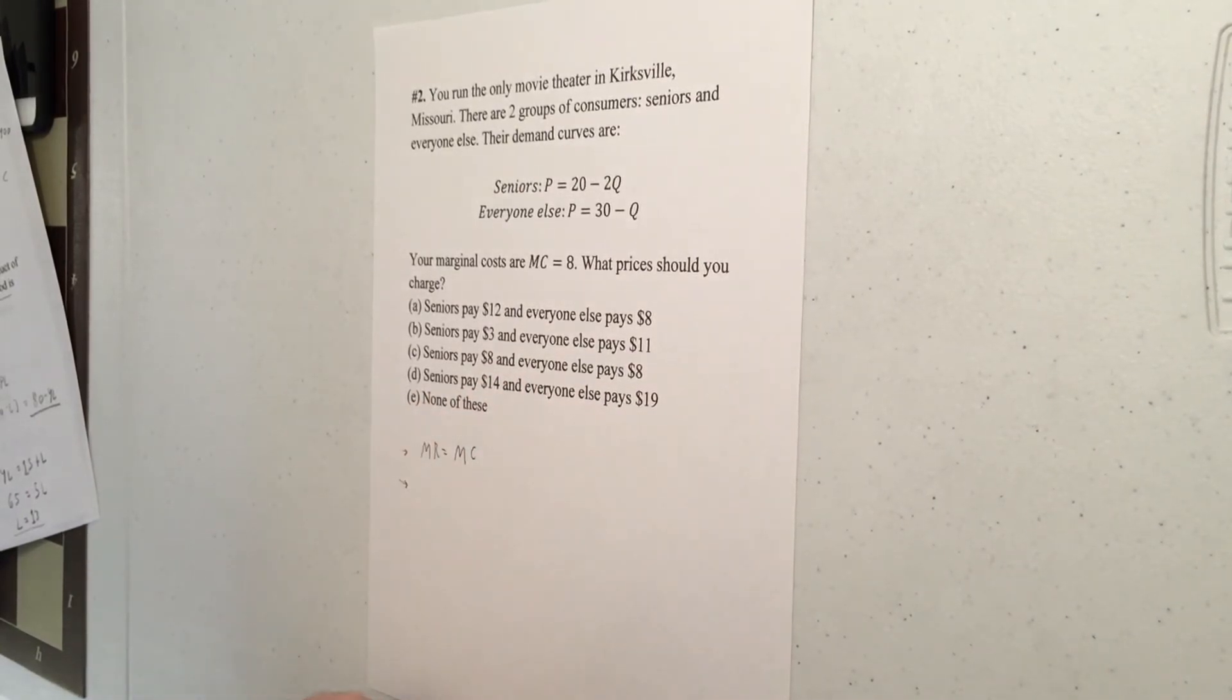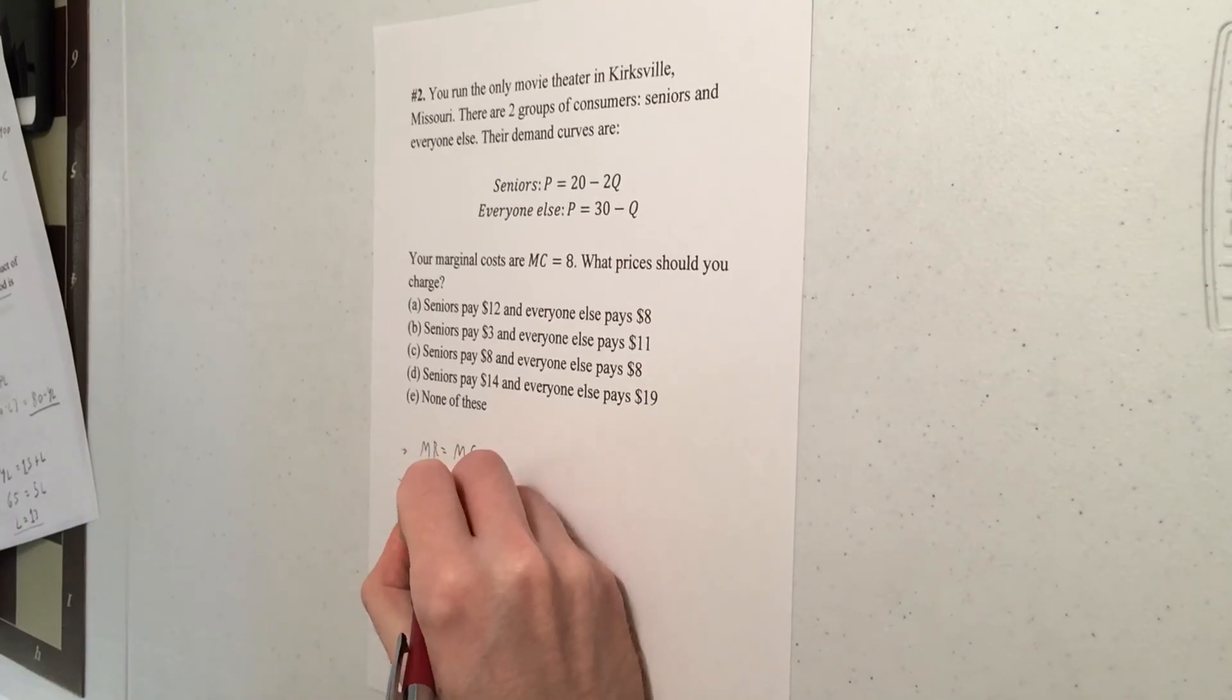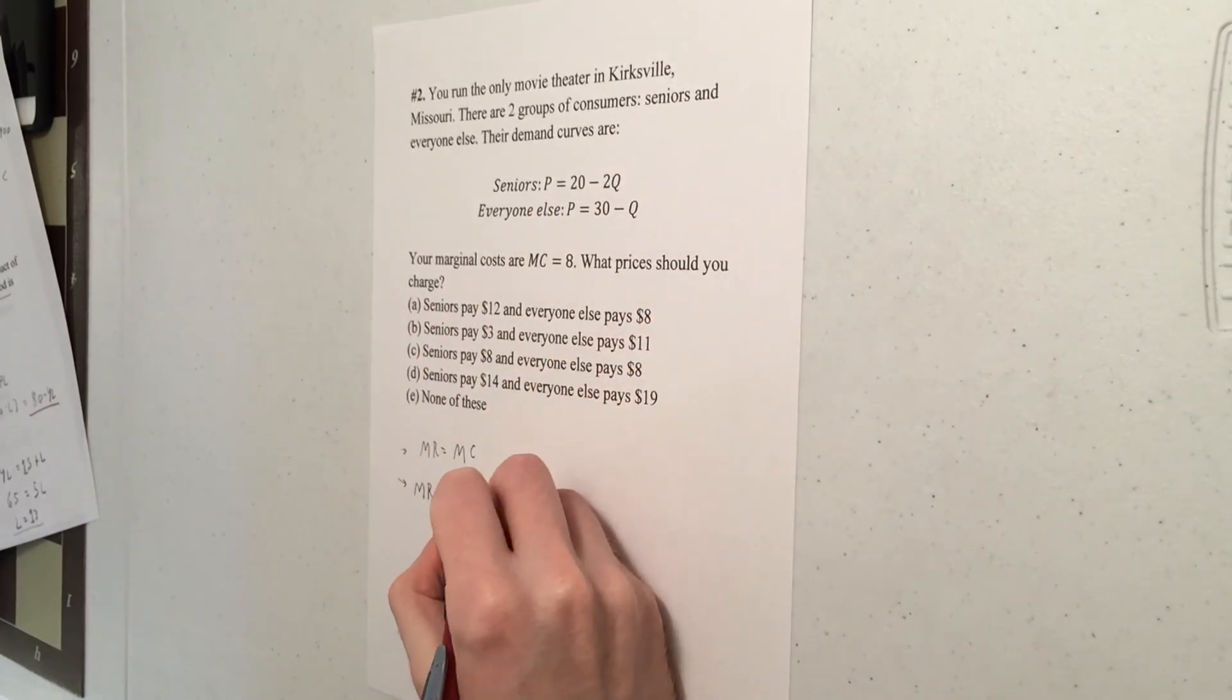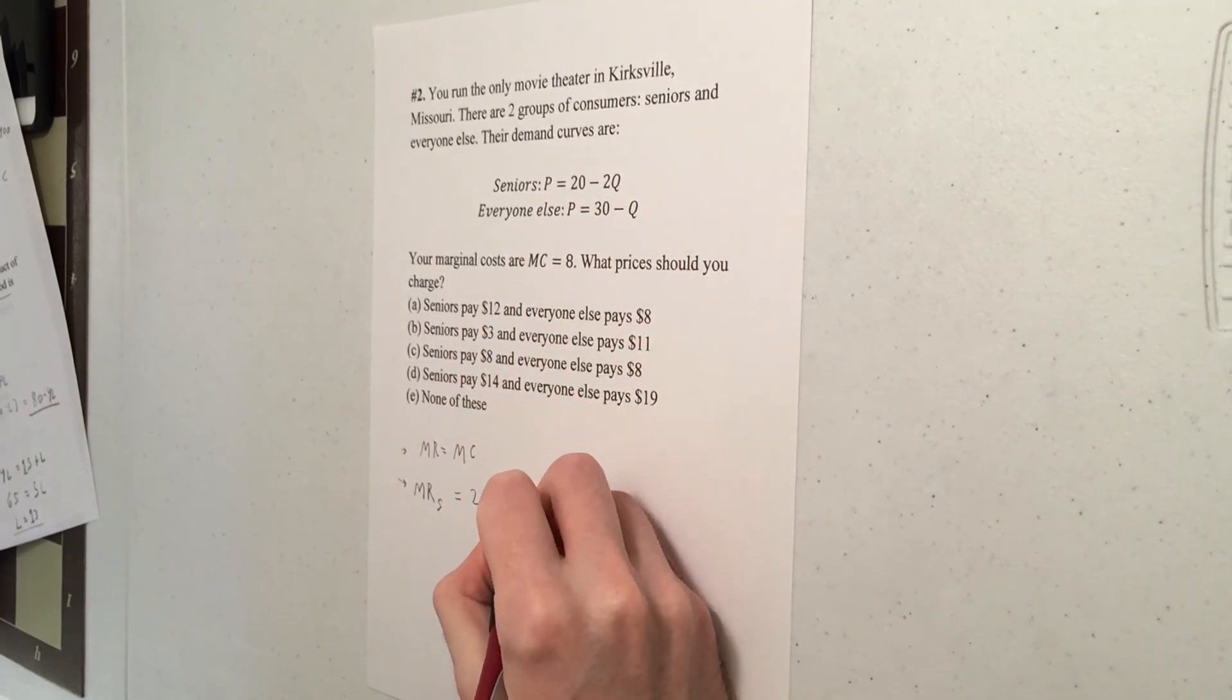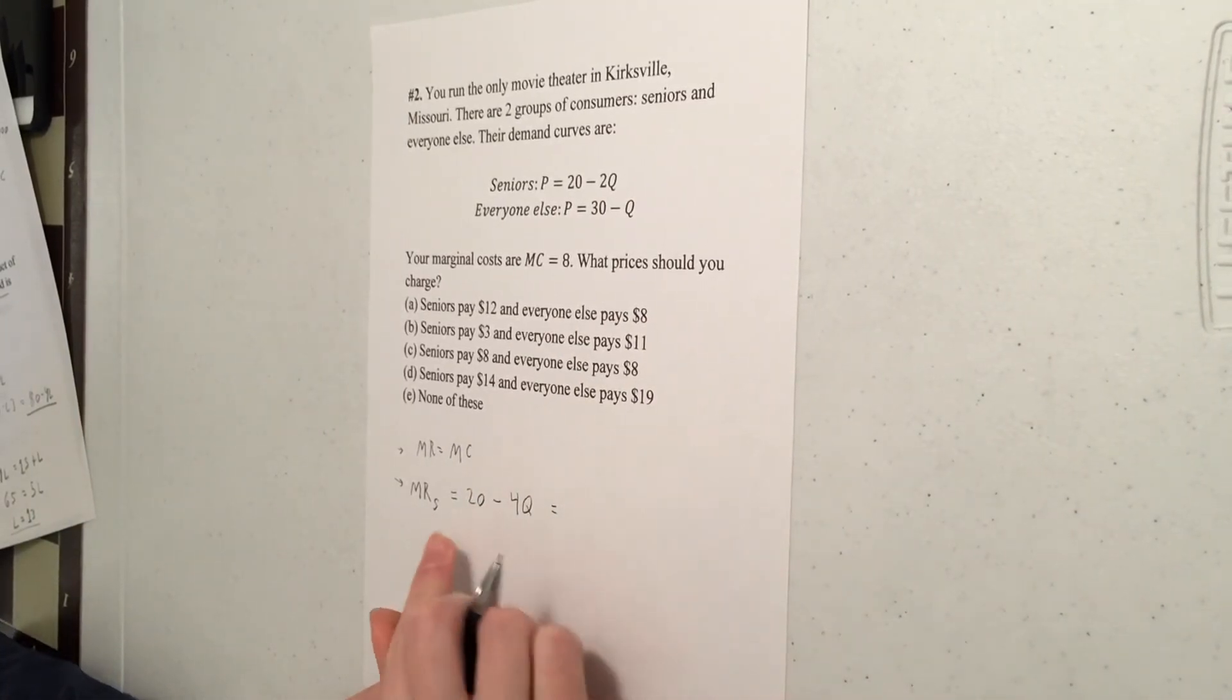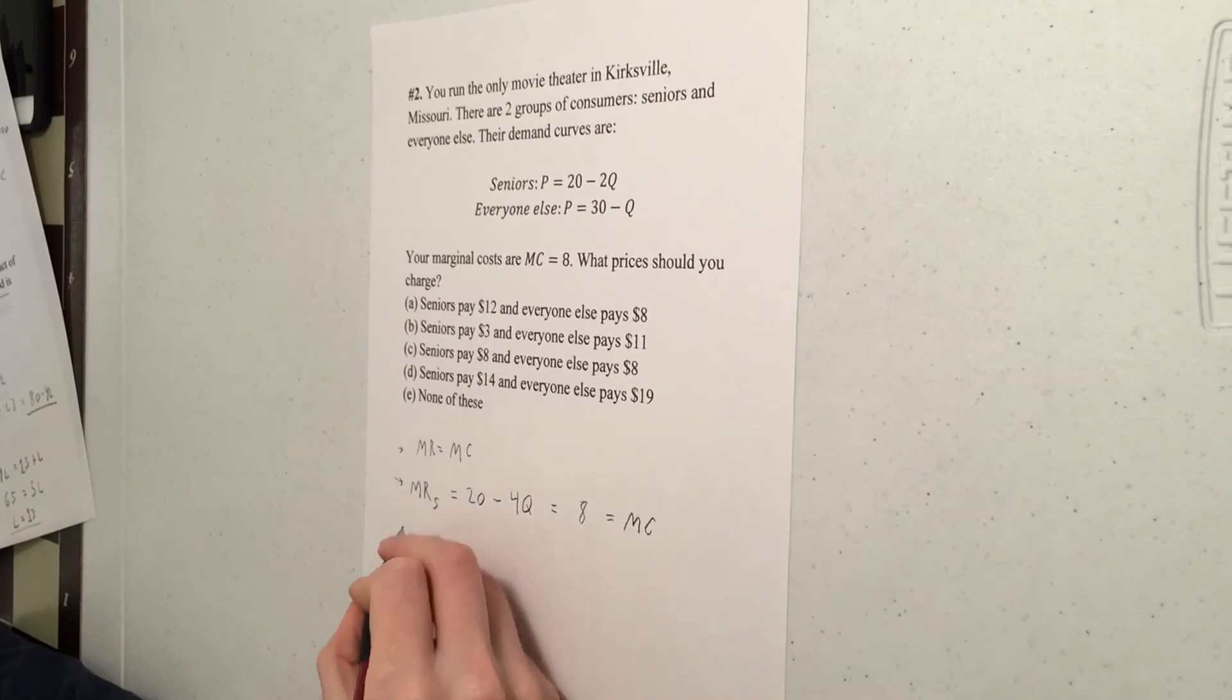So we know that for each group to maximize profit, you want to have marginal revenue equal to marginal cost. We said earlier, we've gone over this a number of times, that for marginal revenue, you have the same intercept as demand, but double the slope. So here, intercept is 20. So that stays for the seniors. The slope is two. If you double that, now our slope is four.